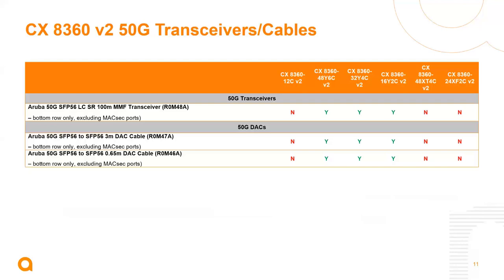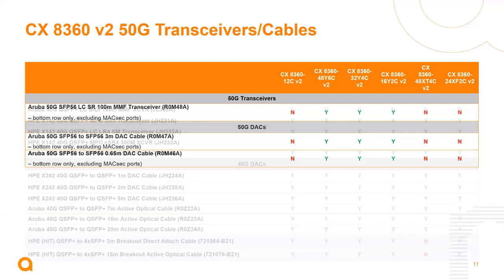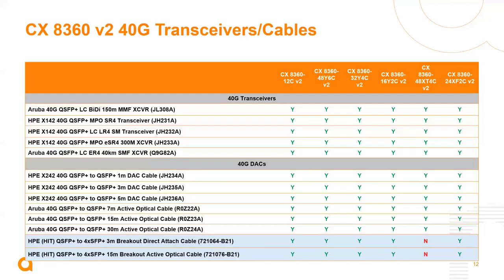The 50 gig transceivers and DACs are only supported on three models: the 48Y6C, the 32Y4C, and the 16Y2C. For 40 gig optics, transceivers and DACs — similar to the 100 gig option — the 48 BaseT model does not support splitting.